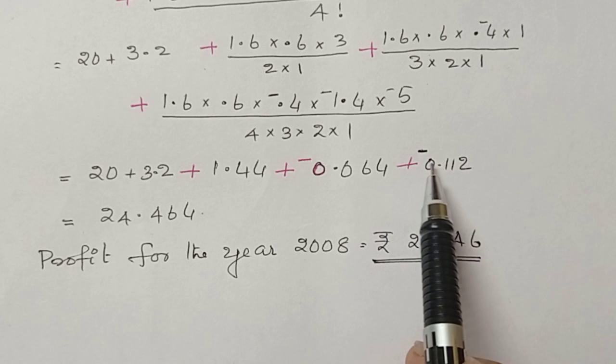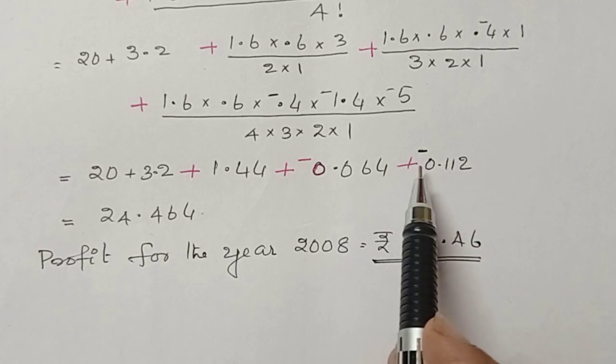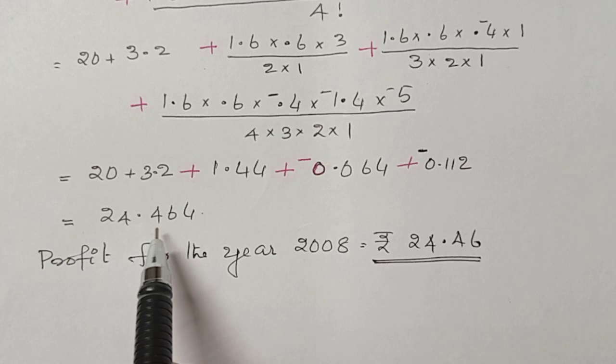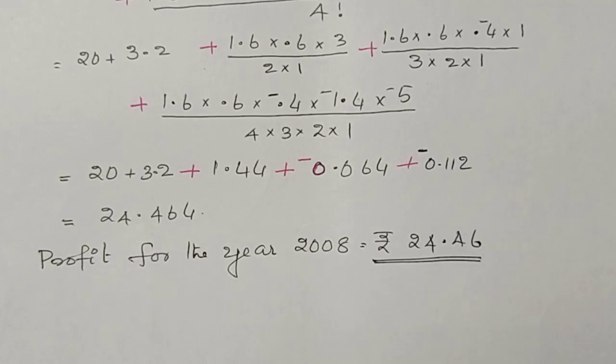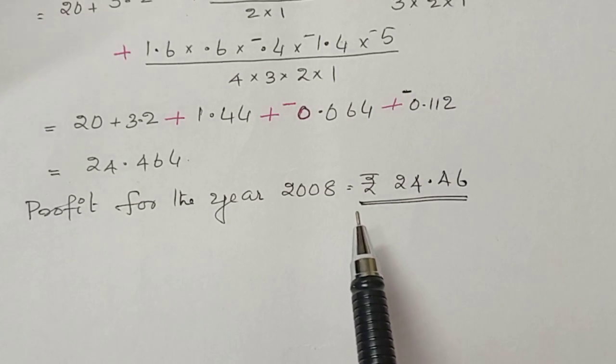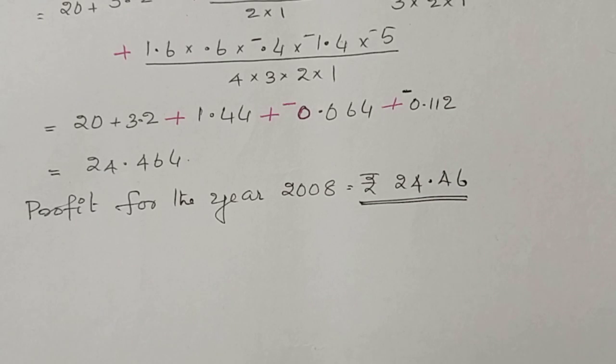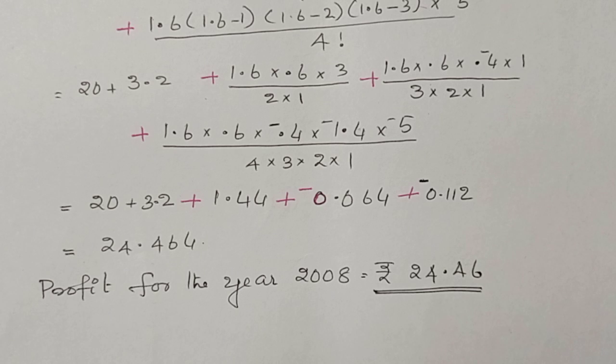By adding all these things together you will get 24.464. Therefore, the profit for the year 2008 is equal to rupees 24.46. For more videos of QT sem3 of BCom, you can subscribe my channel or look at the playlist.